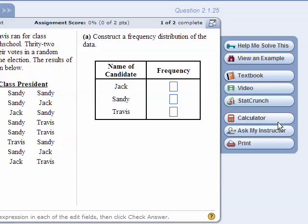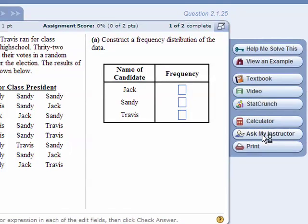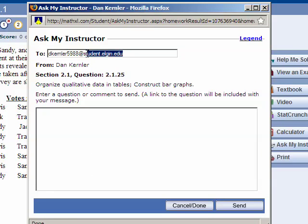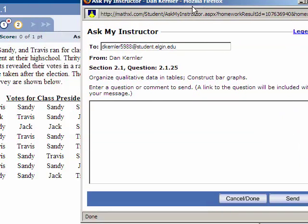The ask my instructor is a great tool. What this does is it opens up an email window which will send an email to my email address here. What this does is send an email to me and links the particular question you're looking at, and you can just do a quick sentence about what it is that's confusing you.